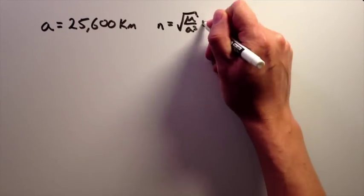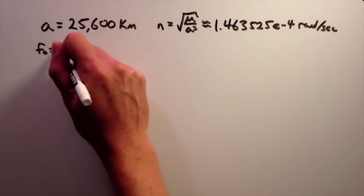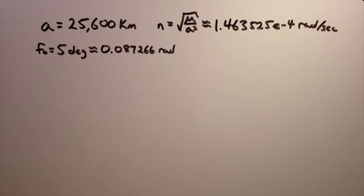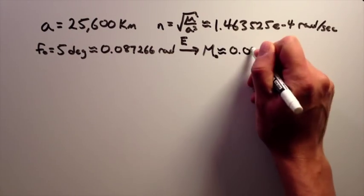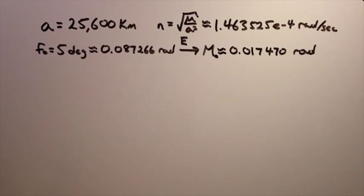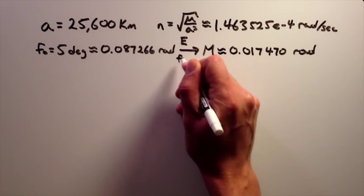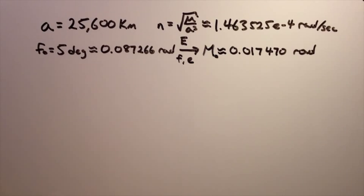First, you calculate the mean motion. Then, you convert the true anomaly to the mean anomaly using the eccentric anomaly as a go-between. The only information you need in order to make this calculation is the true anomaly and the eccentricity of the orbit. Make sure the true anomaly is in radians and not degrees.